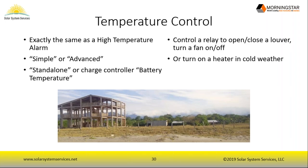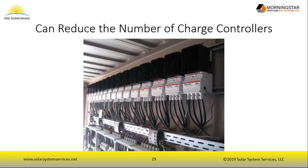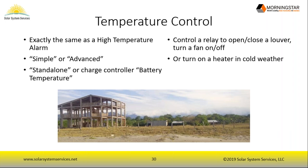Temperature control features work the same as the high temperature alarm — simple or advanced, standalone or based on battery temperature from the charge controller. Practical uses include turning a fan on and off or opening and closing louvers to manage enclosure heat — for example, one channel for louvers and another for fan control. Heating loads are generally avoided in off-grid systems as they waste energy.